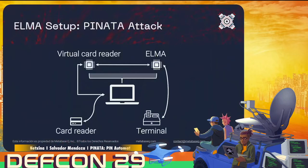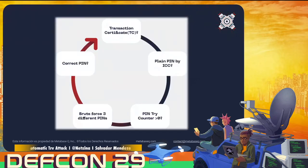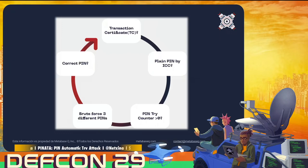Internally, the computer runs a virtual card reader that receives data from the physical card reader and sends it to the ELMA board — processing the data internally and then presenting it to the terminal. The virtual card reader allows emulating a card reader while simultaneously modifying data in real time. To visualize the pinata attack flow: after a transaction, it checks if plain PIN by ICC is available; if so, it checks the PIN try counter; if greater than zero, it attempts brute force; if the PIN is not found, it repeats the cycle until the correct PIN is found.